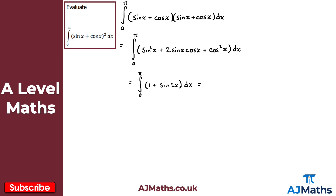Integrating term by term: integrating 1 gives x, and integrating sin 2x gives minus cos 2x over 2. So we have [x minus cos 2x over 2] from 0 to pi. Now we evaluate the limits, starting with the upper limit: substituting pi gives pi minus cos 2pi over 2. Cos 2pi equals 1, so the upper limit evaluates to pi minus one half.